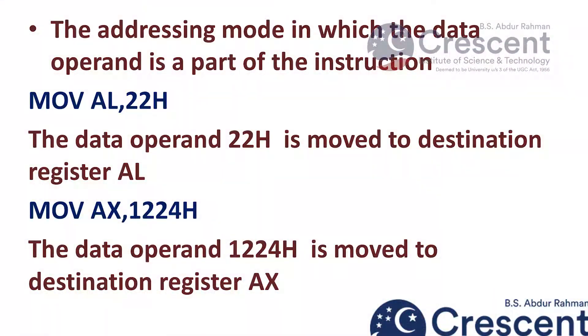Another example for immediate addressing mode is MOV AX, 1224H. Here, AX represents the 16-bit destination register and 1224H represents the data. The 16-bit data is moved from source to destination register AX.